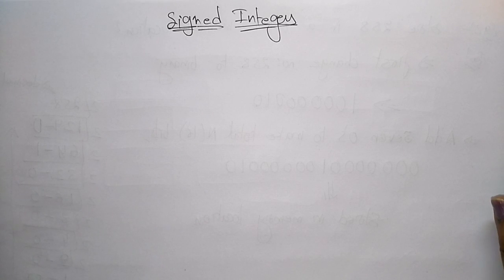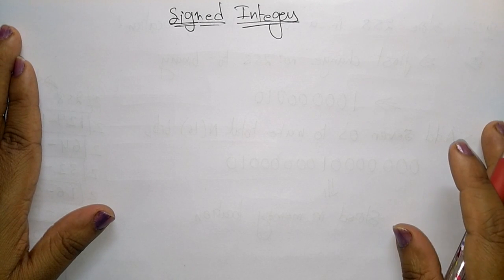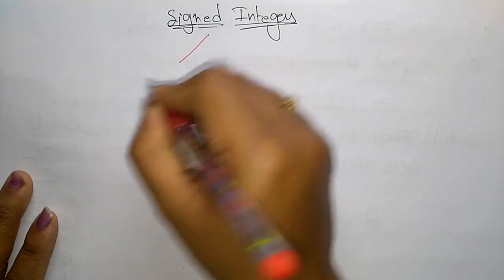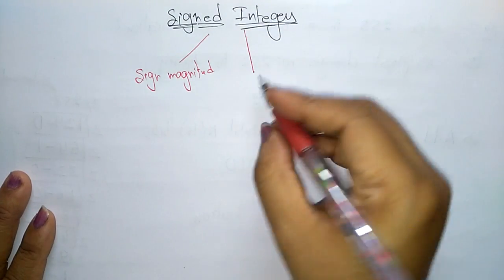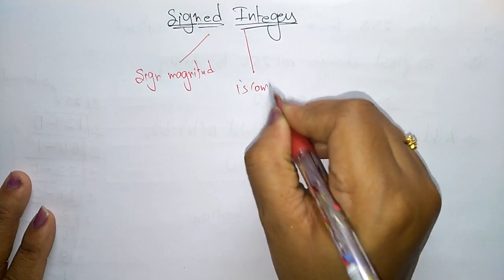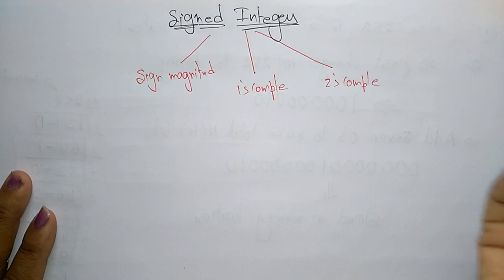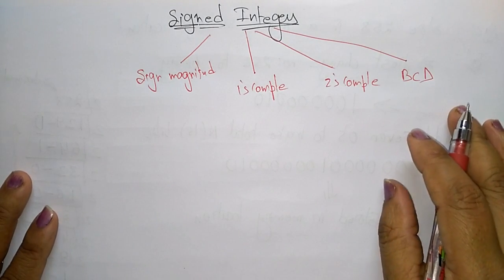Let us continue with signed and unsigned integers. In the previous video I explained unsigned integers. Now let us see what signed integers are. Signed integers can be represented in several ways: sign magnitude, one's complement, two's complement, excess-N bias, or BCD (binary coded decimal) representation.